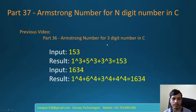What is an Armstrong number? Here we have input number 153. This number contains 3 digits: 1, 5, 3. So we need to check if the sum of cubes of individual digits is equal to 153. Here 1 cube plus 5 cube plus 3 cube is equal to 153, so 153 is an Armstrong number.